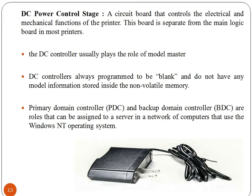The next part is the DC power control stage, which features a circuit board that controls the electrical and mechanical functions of the printer. This board is separate from the main logic board in most printers. The DC controller usually plays the role of model master, and is programmed to be blank without any model information stored in non-volatile memory. Primary domain controller and backup domain controller are roles that can be assigned to a server in a network of computers using the Windows operating system.